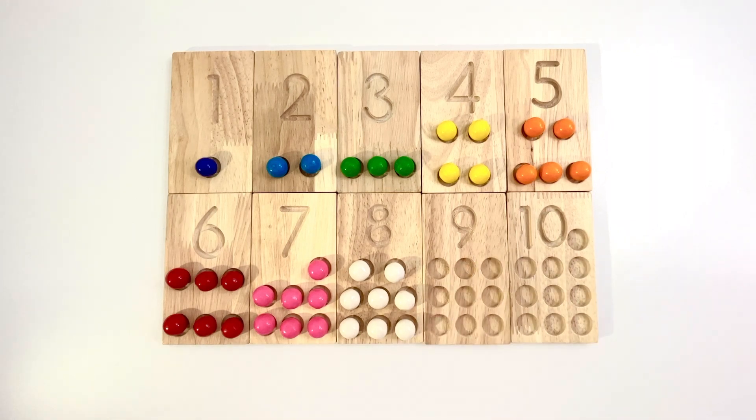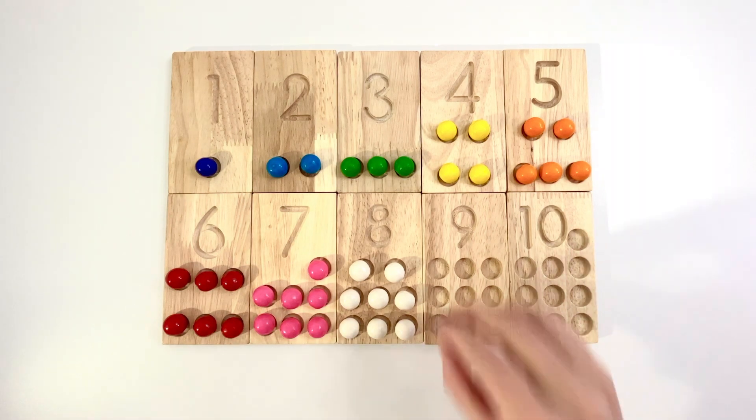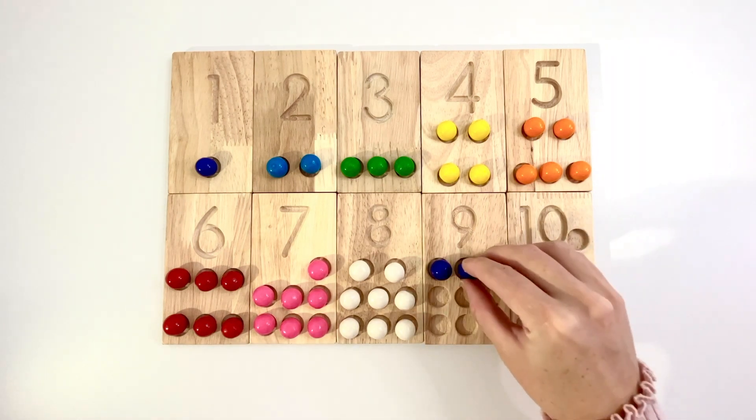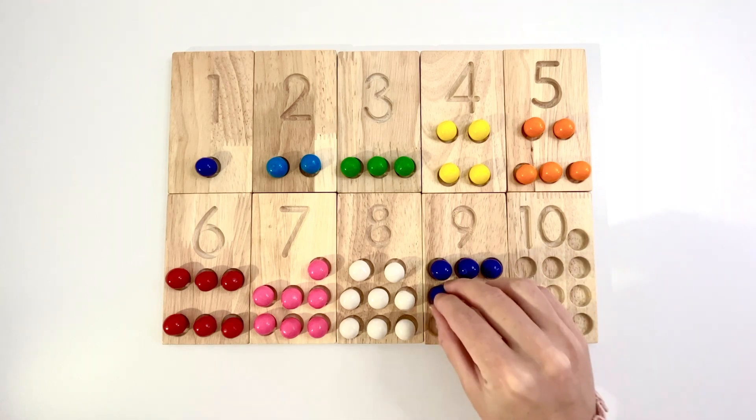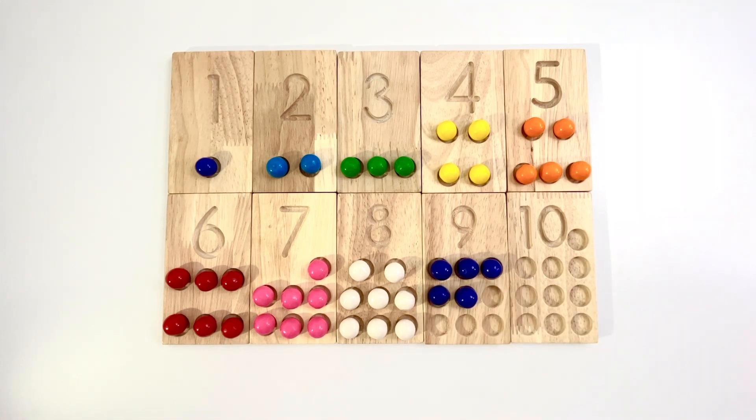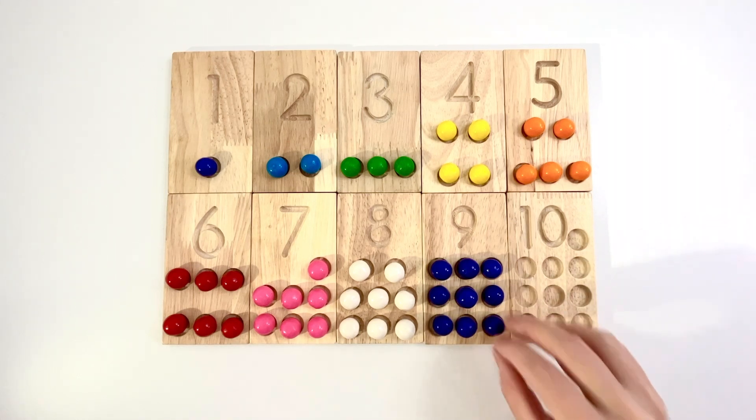Number nine. Nine purple candies. One, two, three, four, five, six, seven, eight, nine.